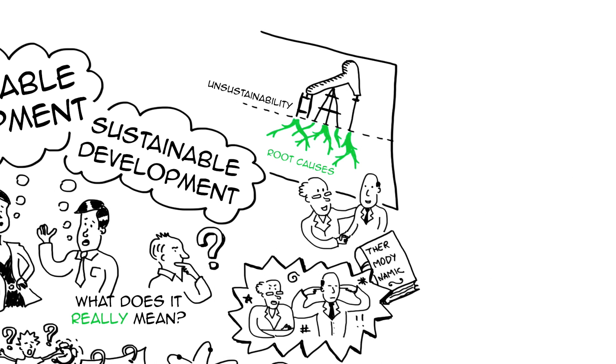And maybe that will lead to understanding what the root causes of unsustainability are. So that's what he did. He put together a group of 50 scientists, mathematicians, physicists, chemists, etc. And after 22 drafts, they agreed on several things.